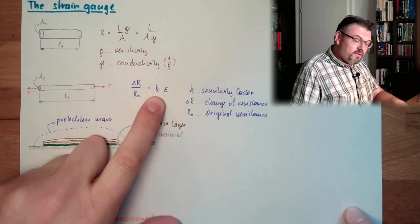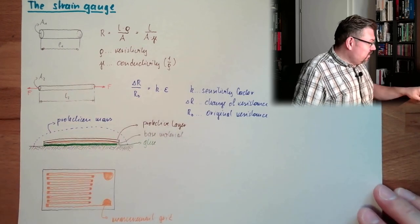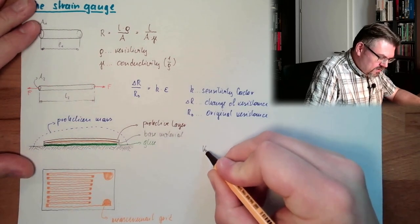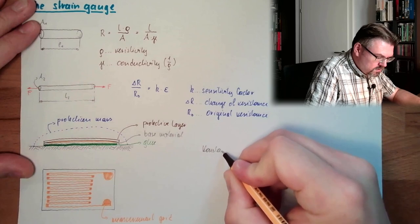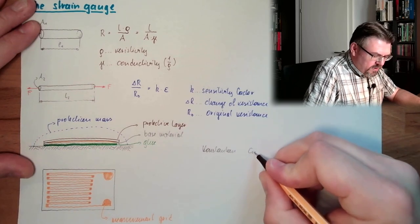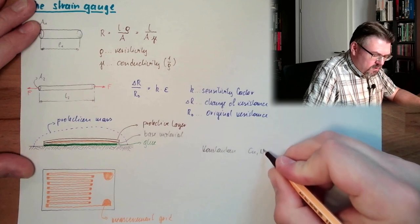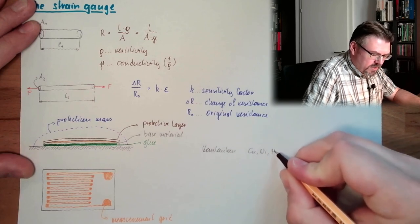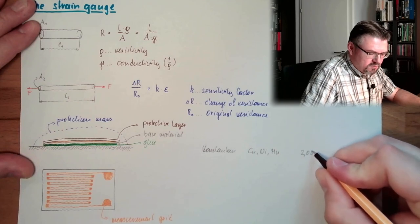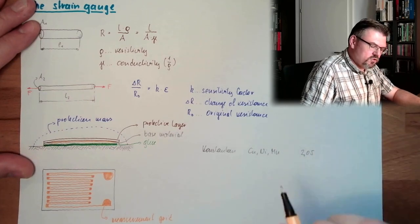Different material, different case. I will write down now some materials. So there is, for instance, Constantin. This is a mixture between copper, nickel, mangan. This is a K of 2.05.